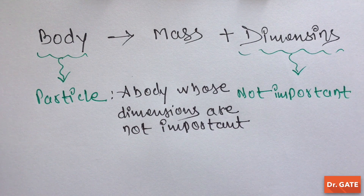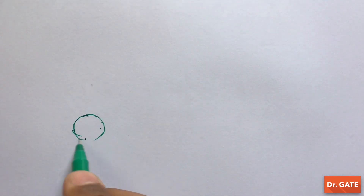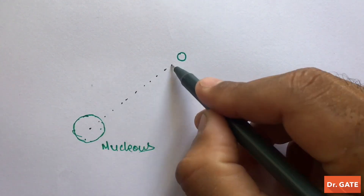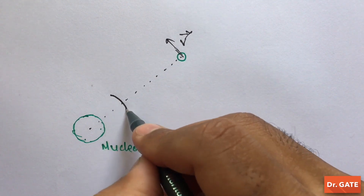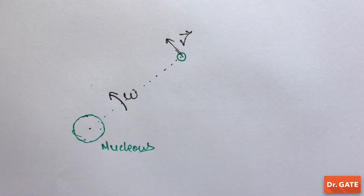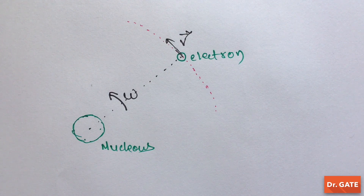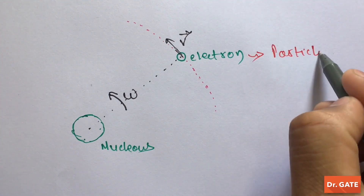Let's take an example for better understanding. Suppose this one is the nucleus, and this is the electron revolving around the nucleus. And we want to study the motion of this electron around the nucleus. Then for this particular study, the dimension of this electron is not important for us. So we can take this electron as a particle.